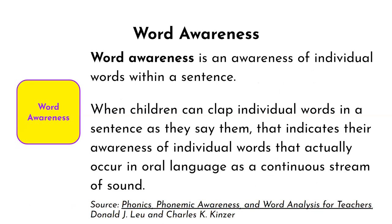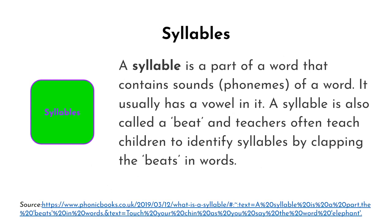Word awareness is an awareness of individual words within a sentence. This may seem like a simple task, but fluent oral language is a continuous stream of sound. To the untrained ear, it can be difficult to hear individual words in a sentence that is spoken naturally. A syllable is a part of a word that contains sounds of a word. Most syllables have a vowel, though some words, such as rhythm, have syllables without vowels. While this is rare, it does occur.